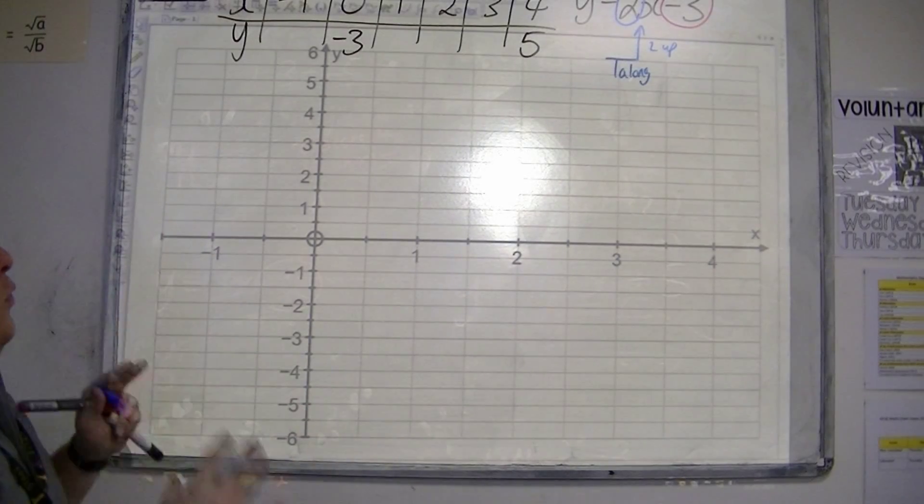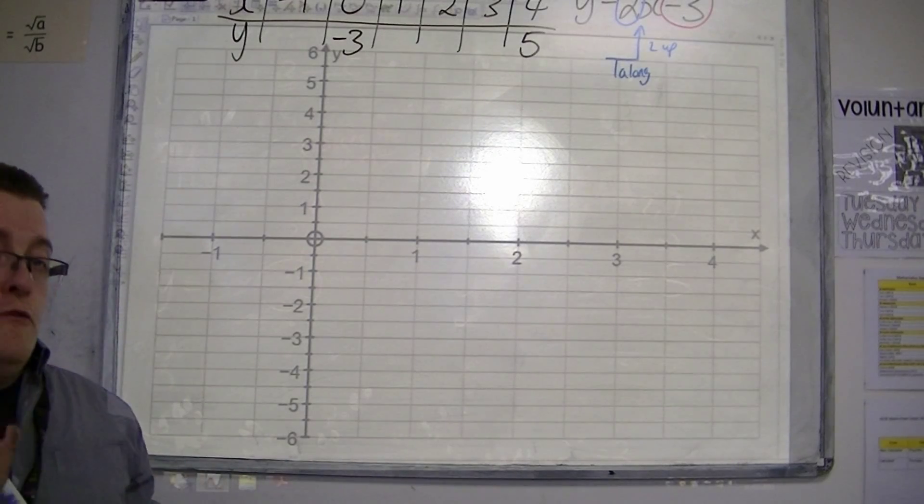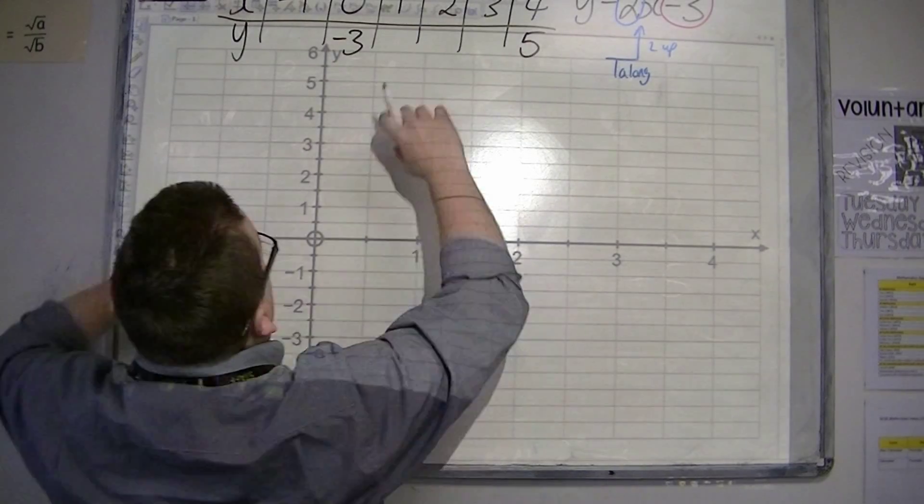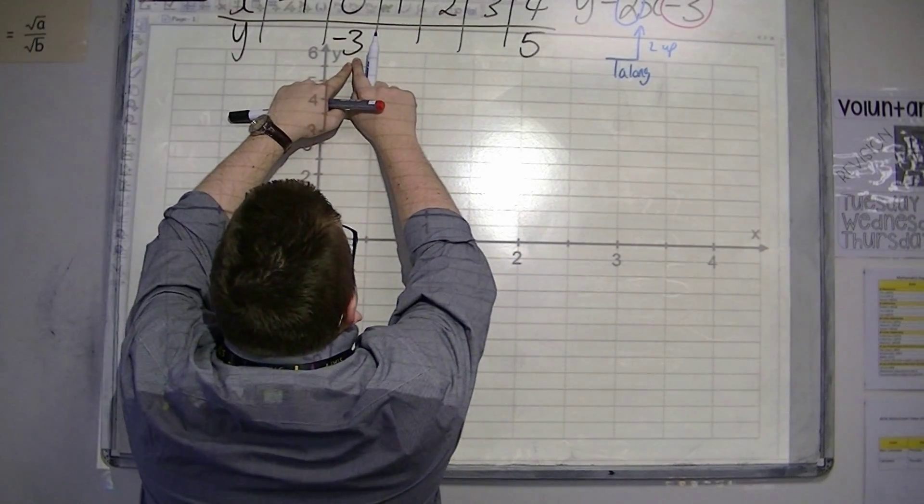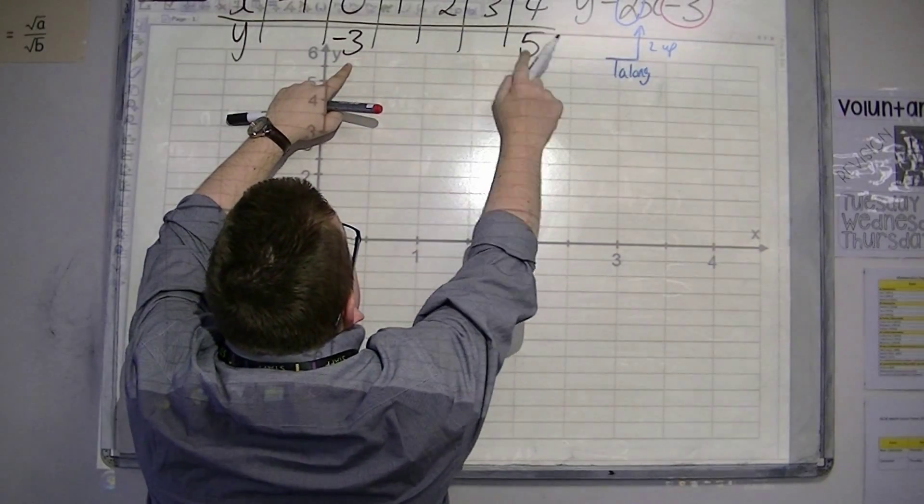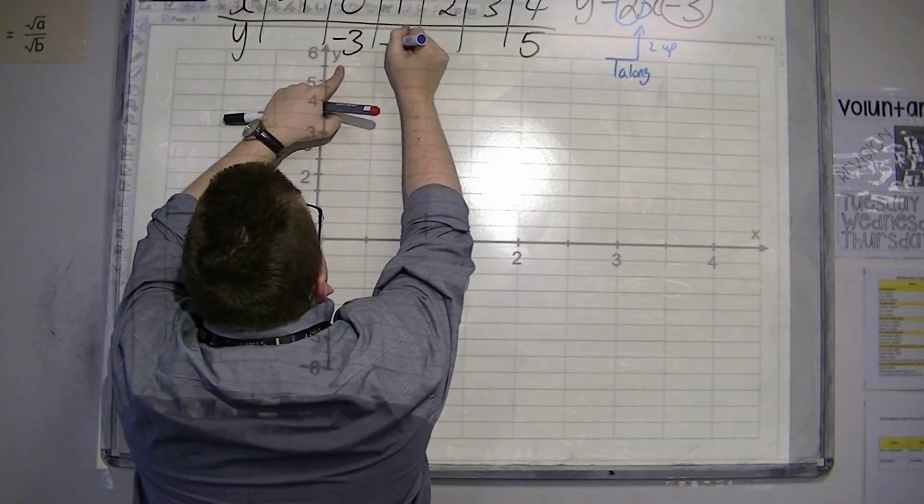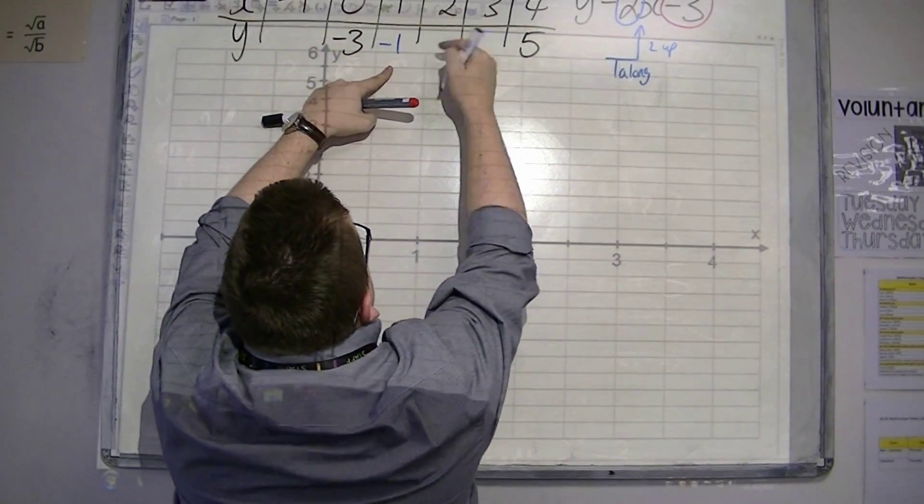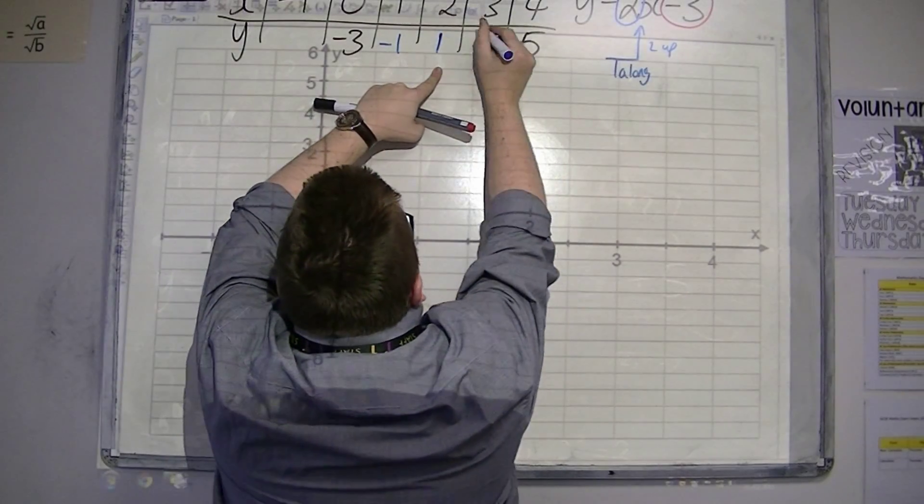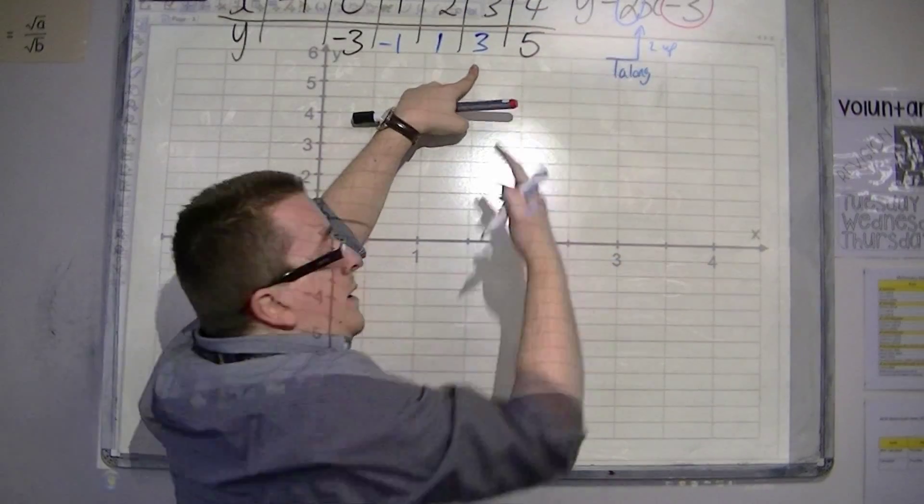So that also means that for the numbers in the table, for every one along, you're going 2 up. So for every position I move, I need to increase by 2. Minus 3 will increase to minus 1, adding on 2. Then minus 1 will increase to 1 by adding on 2. And then 1 will increase to 3 by adding on 2. And then 3 will increase to 5 by adding on 2.